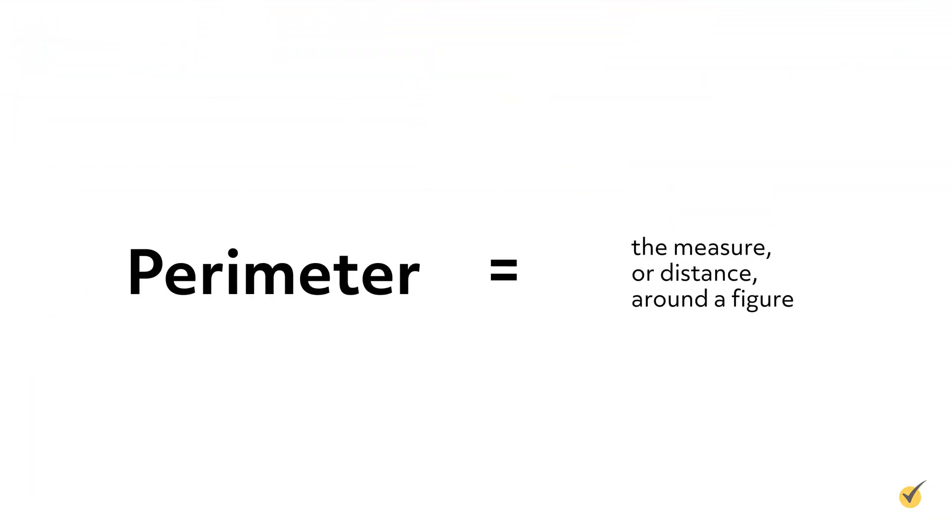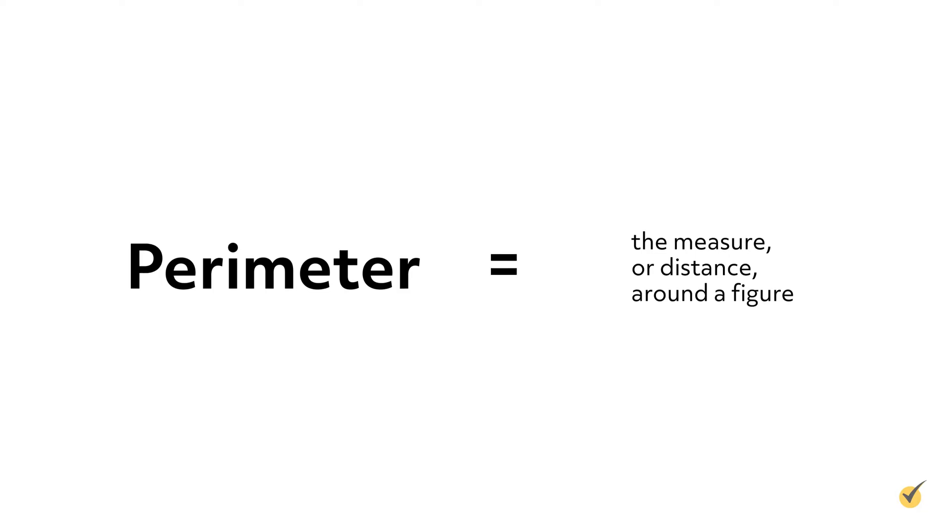This video explains how to find the area and perimeter of rectangles and squares. The word perimeter comes from a Greek prefix peri that means around, and a Greek root metron that means measure. Thus, the perimeter of a figure is the measure or distance around it.